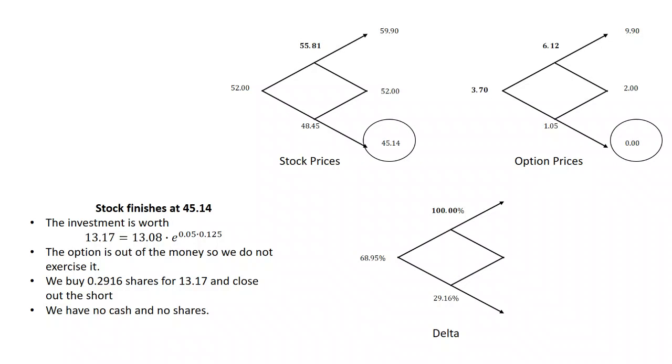The same is true if we sold the option at fair value. We've just got to do the opposite strategy with our deltas. This delta, if we sold this option, the delta is $0.6895. Instead of selling $0.6895 shares, we'd have to buy $0.6895 shares.